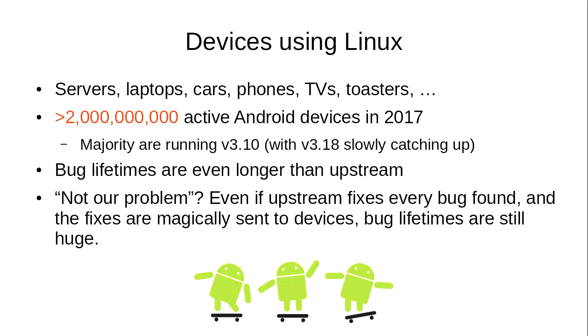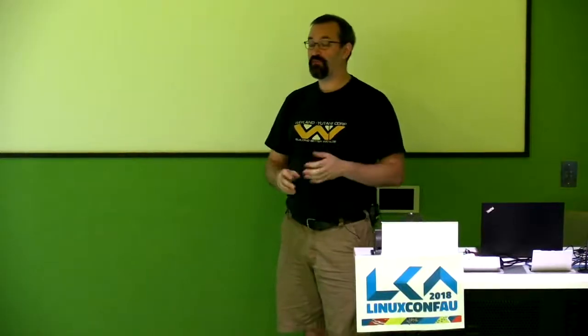I'm talking about the lifetime as being when a bug was introduced and when something was solved. There tends to be a lot of attitude in the upstream kernel community — 'this is not our problem, they're running such an old kernel, they should use the latest kernel.' But they are still running the Linux kernel. How do we get to a place where, even on an old kernel, you're at least somewhat defended? Because it's hard to get bug fixes back to old devices.